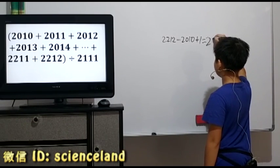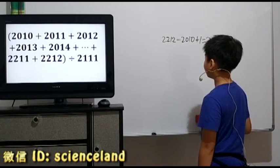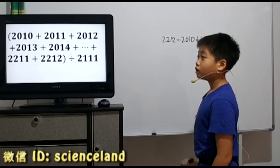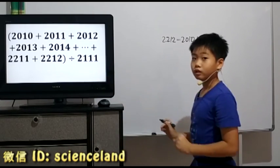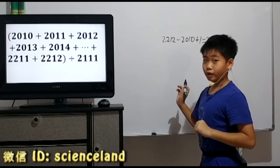And this is 203. Next, we calculate the total of the numbers inside the bracket.